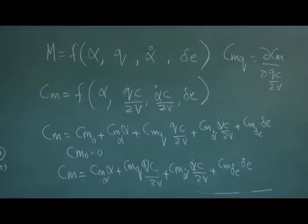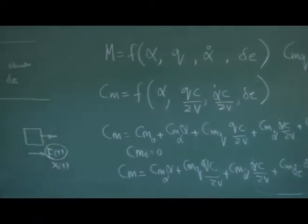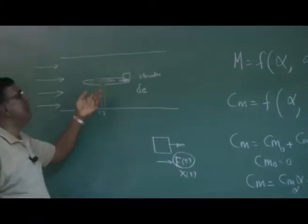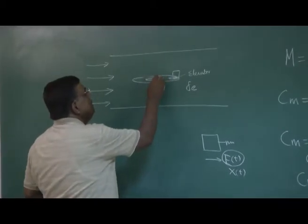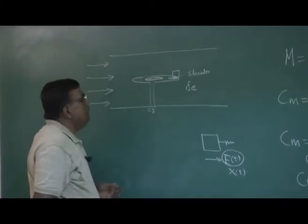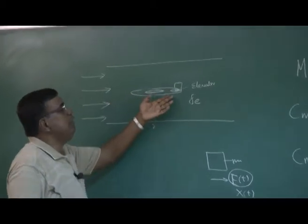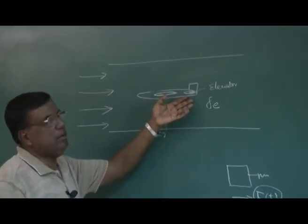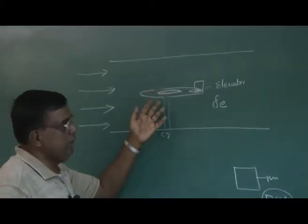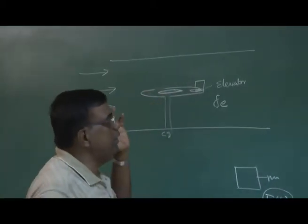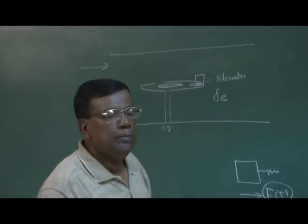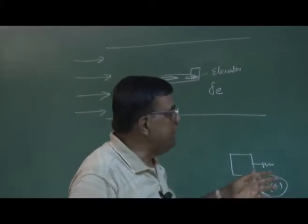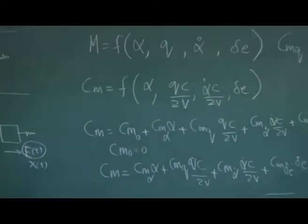Let us take a simplified case where I put Cm_naught equal to 0. If the wing is symmetrical, the tail is symmetrical, and the fuselage is symmetrical — everything is symmetrical — then at alpha equal to 0 there will be no Cm. So I can always put Cm_naught equal to 0.